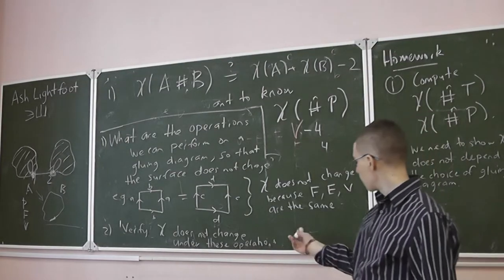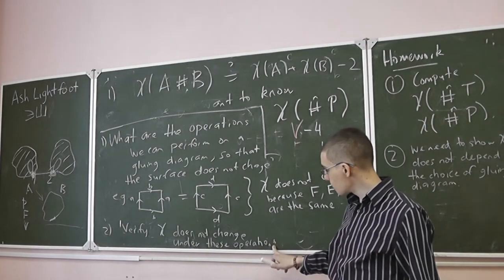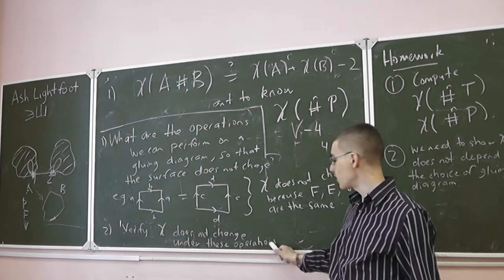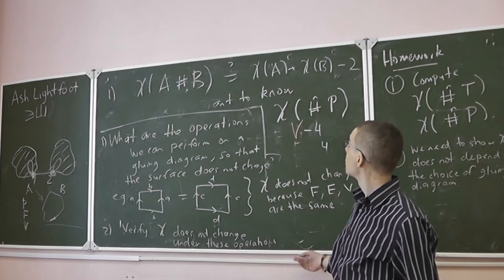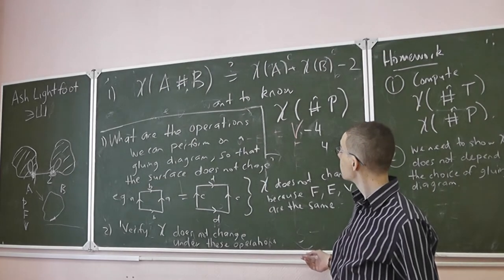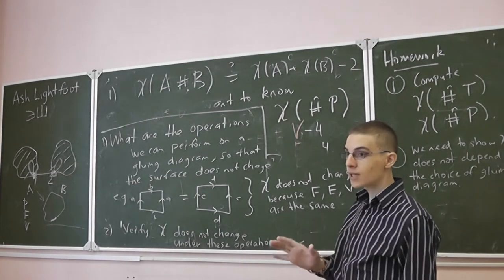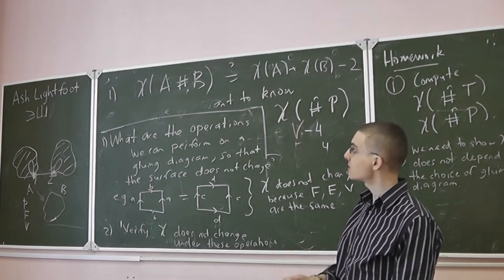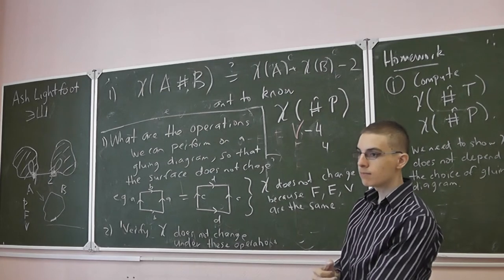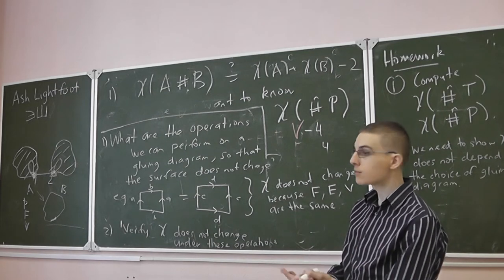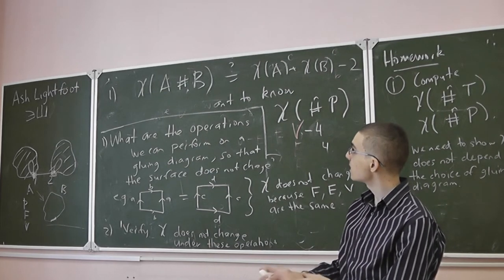And you can share it with us next week and then we will have classified all surfaces because we would've been able to show, given a surface, we can view this Euler characteristic and that tells us if it's a connect sum of m tori or m projective planes and we know what those numbers are in m.